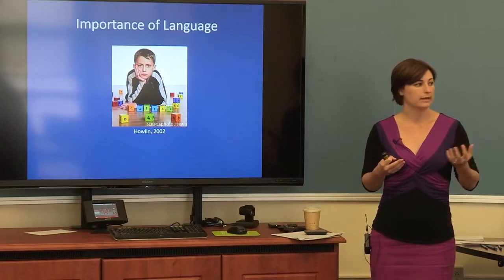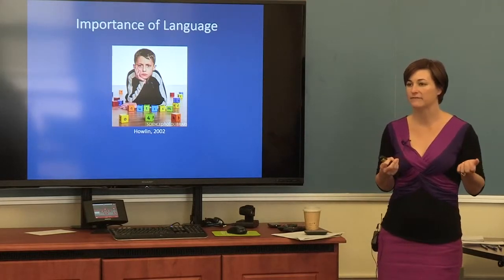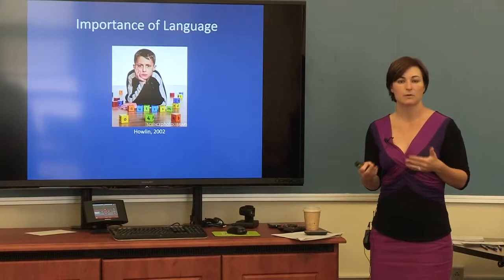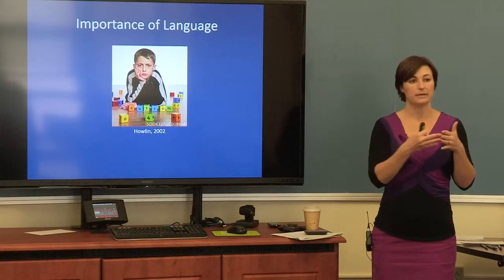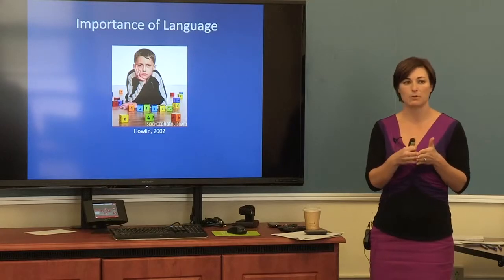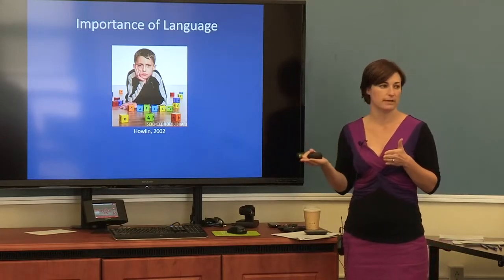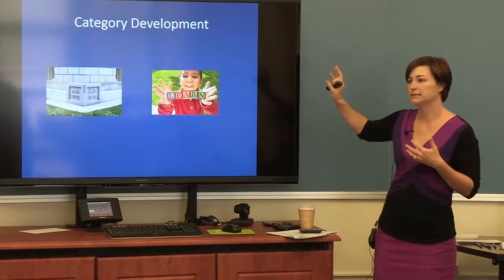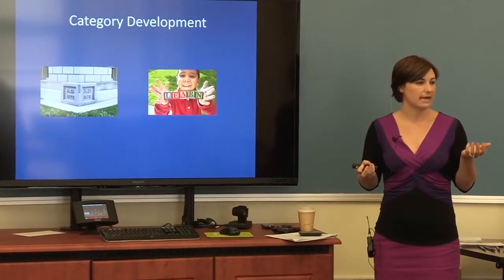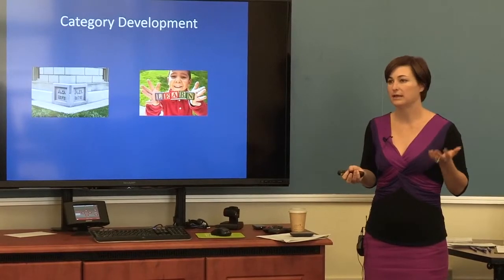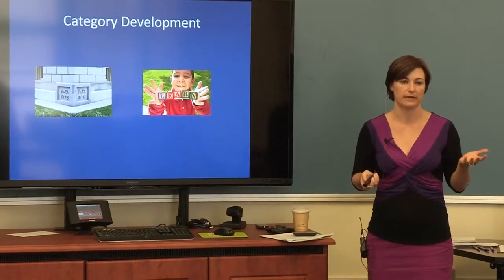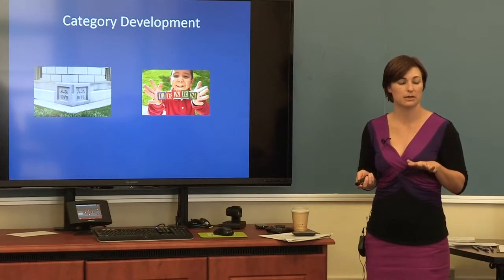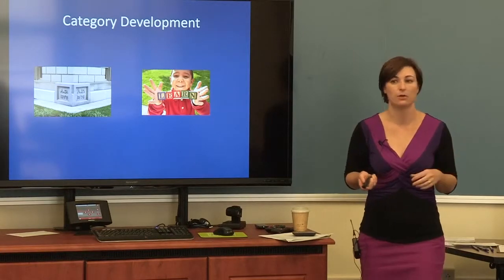Expressive language by the age of five is one of the best predictors of outcomes for individuals with autism. So it really behooves us to figure out where they're looking the same as typical language learners and where we see them diverging. Category development offers a really important place to look, because it is a cornerstone of cognitive development and language development. If we can better understand what category development looks like in this population, we can get at something fundamental for language learning.